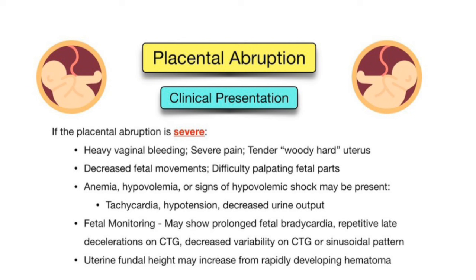Acute renal failure can also occur due to fluid losses. Fetal complications include premature birth, low birth weight, and asphyxia due to insufficient blood flow from compression by the enlarging hematoma. In severe cases, there can be stillbirth or neonatal death due to significant compromise of blood flow, oxygen, and nutrient delivery.